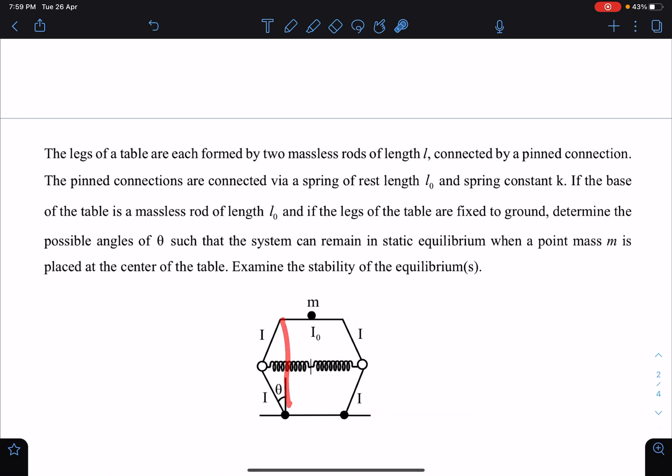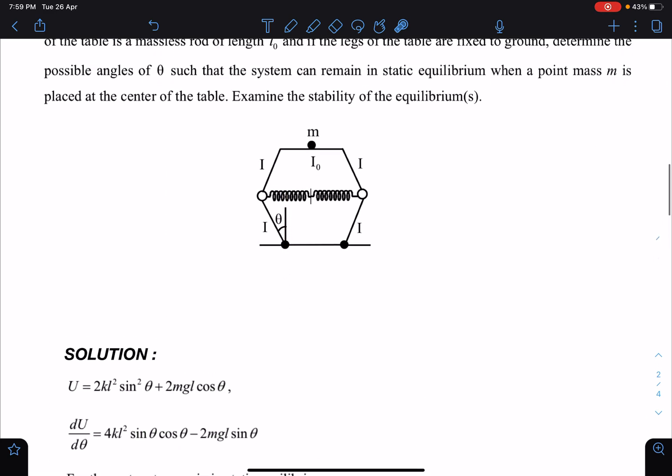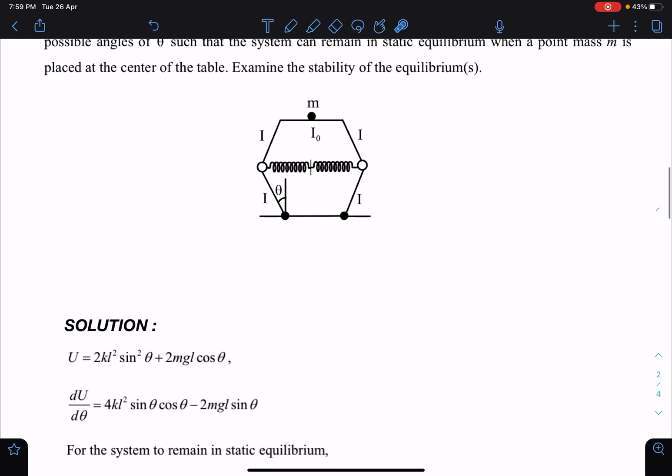Here l sin theta is the extension, so total extension is 2l sin theta. Similarly, its height you can see from here and that will become from the reference mg l cos theta plus mg l cos theta, so 2mg l cos theta. Let's substitute here. I'll write, for this given position, I'll write the overall potential energy.